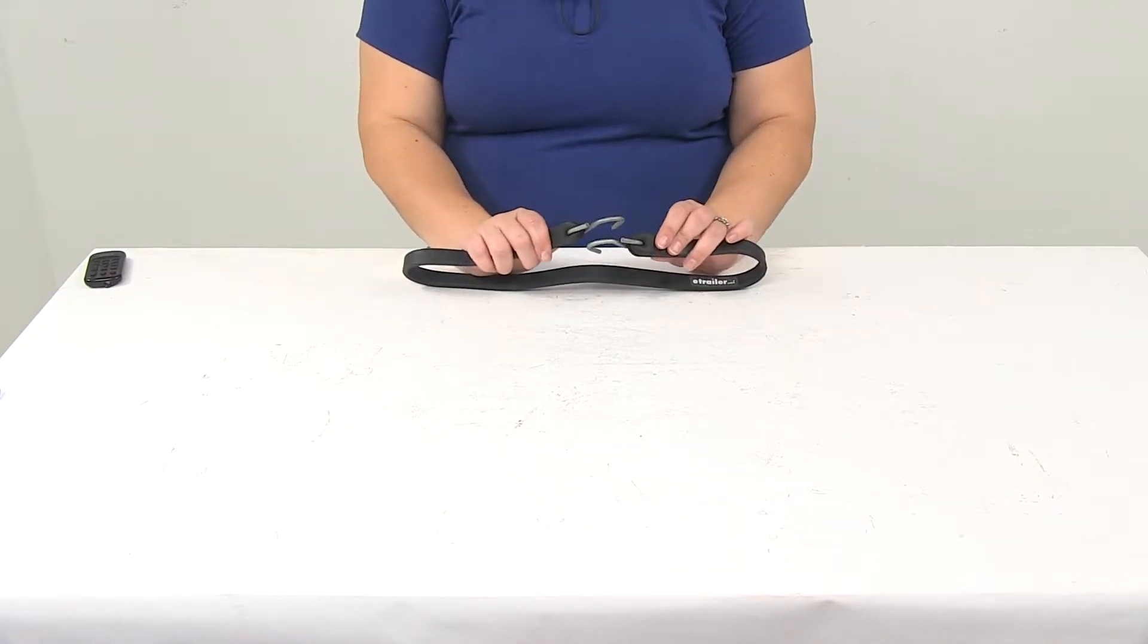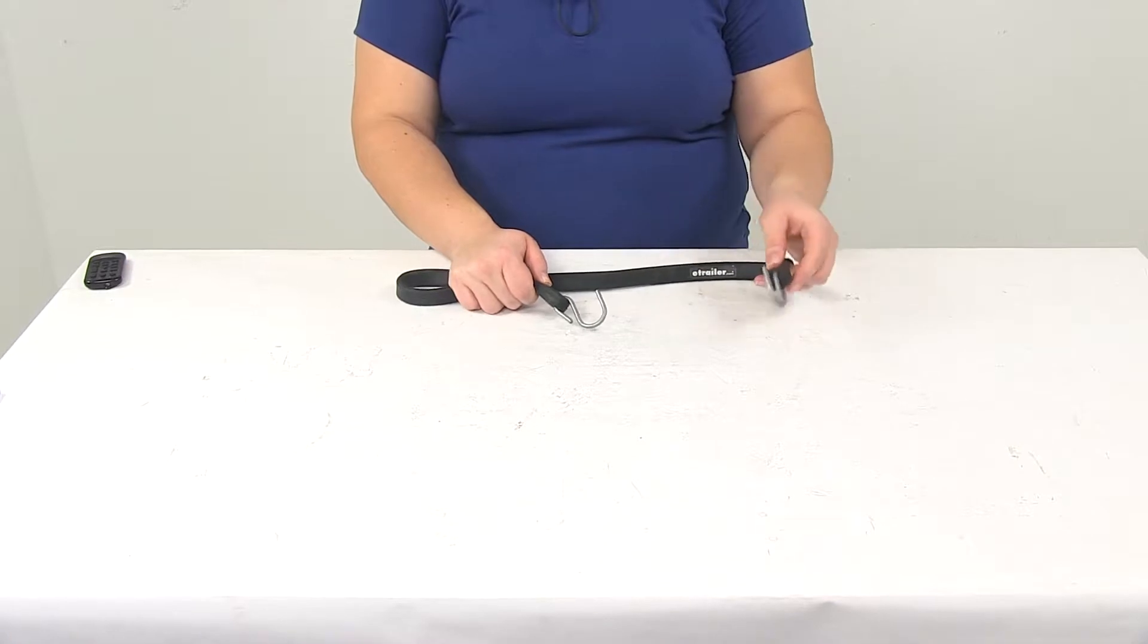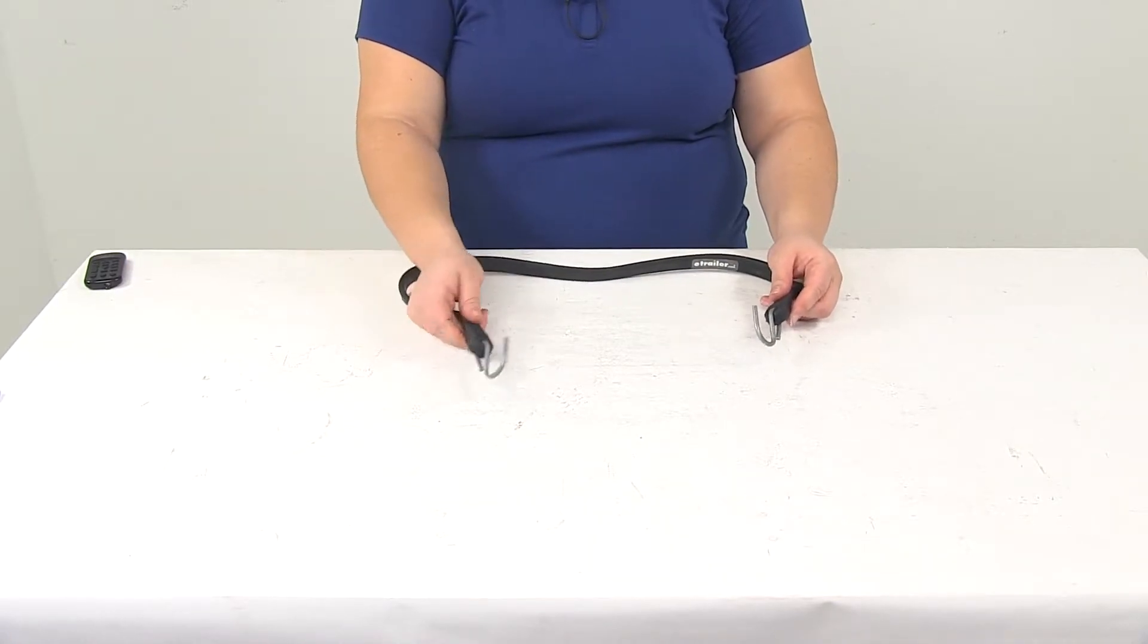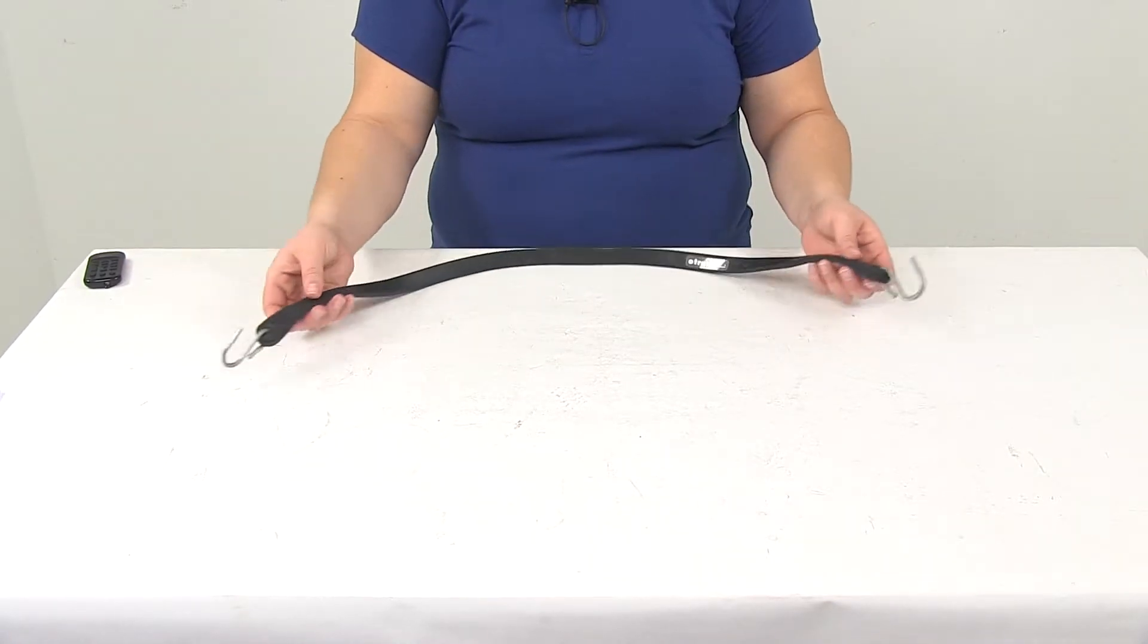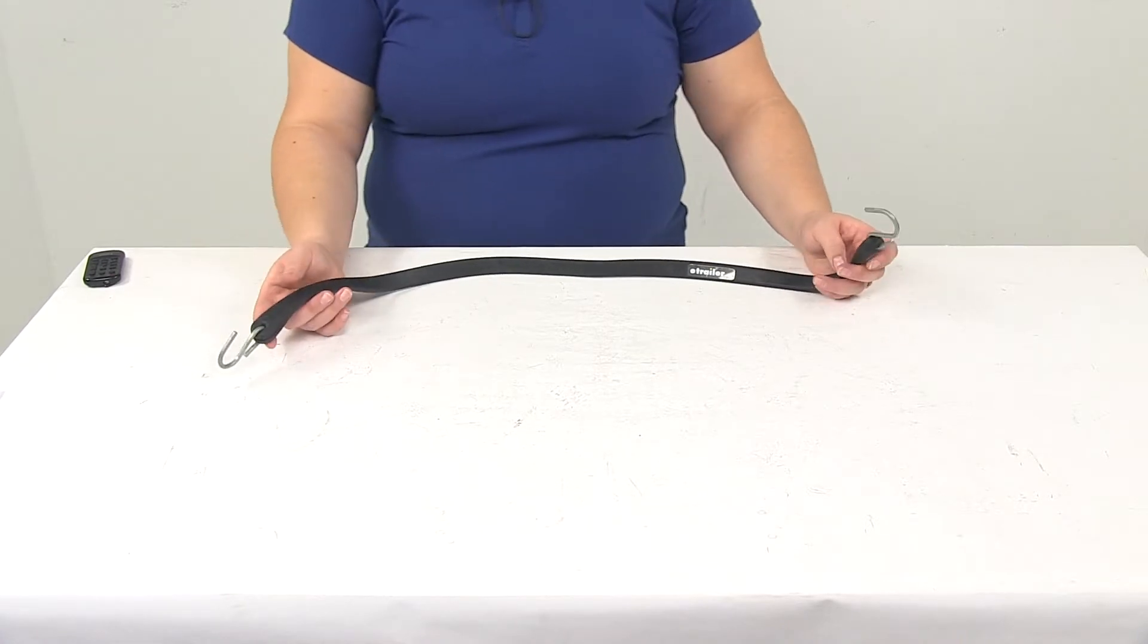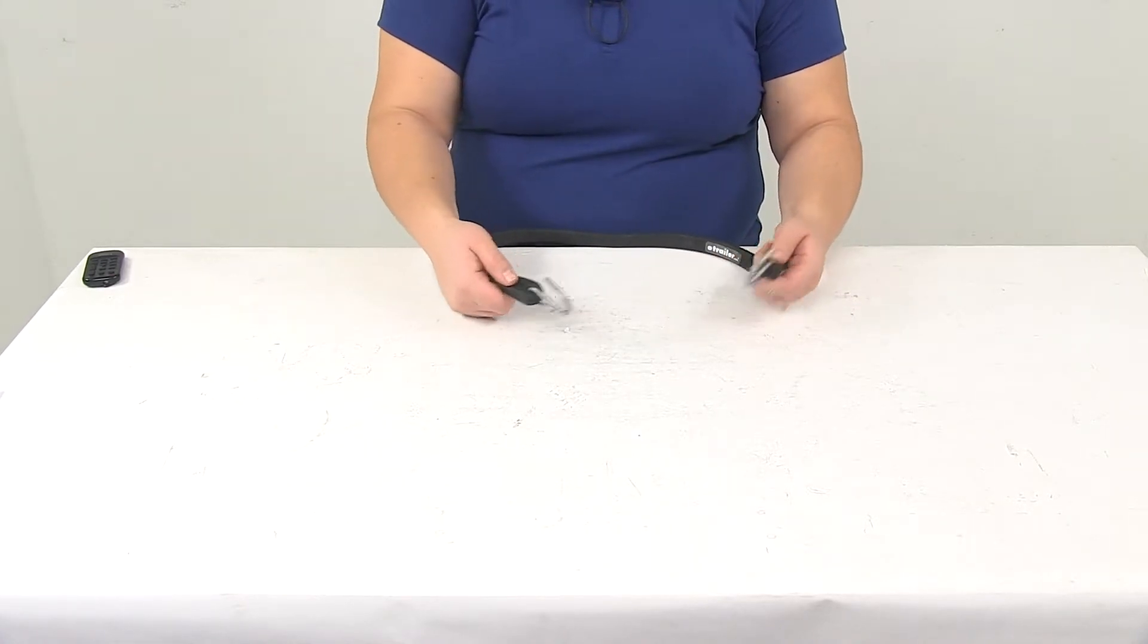The S-Hooks at either end are going to allow you to attach that to either a grommet on your tarp or a tie-down on your truck or trailer, or really wherever you would need a tie-down strap. You just want to make sure that you have a nice good anchor point to keep those in place.